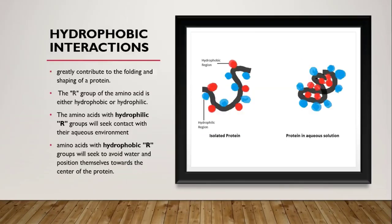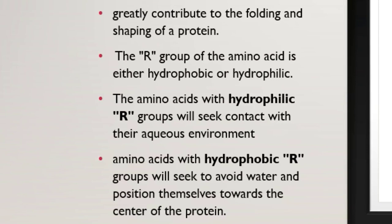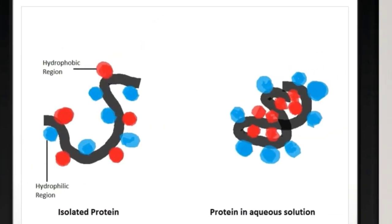First of all, hydrophobic interactions. Polypeptide chains in proteins can be maintained by hydrophobic interactions. In amino acids, the side chains of alkyl groups are either hydrophobic or hydrophilic. Hydrophobic means non-polar, and hydrophilic means polar. So in an aqueous environment, the most stable tertiary structure is one in which hydrophobic amino acids are buried inside while the hydrophilic amino acids are on the surface of the molecule, giving proteins a globular structure.